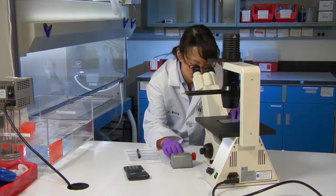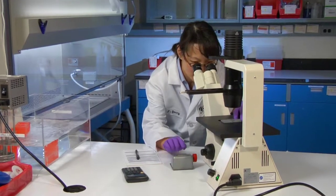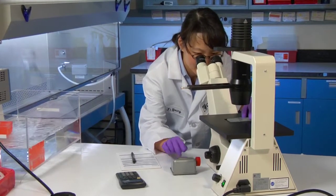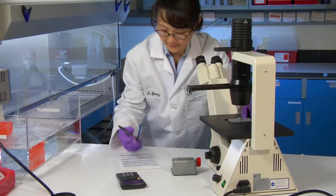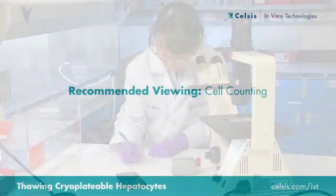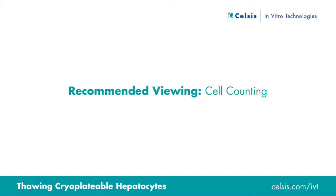The next step is to perform a cell count using the trypan blue exclusion method. This will determine the percent viability of plateable hepatocytes. All Celsis IVT hepatocytes are tested by our independent quality assurance lab to have a minimum of 70% viability.